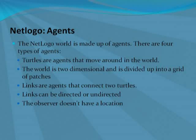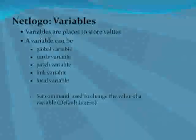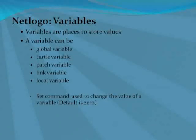The observer doesn't have a location. Looking at NetLogo variables, a variable can be global, a turtle variable, a patch, a link, or a local variable.